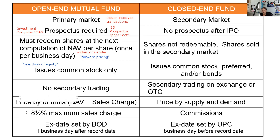The maximum sales charge — very testable — is eight and a half percent. For example, if I had a mutual fund that had a NAV of $9.15 and the sales charge was 85 cents, the public offering price would be $10. And note that would be the maximum: 85 cents divided by $10 equals eight and a half percent.